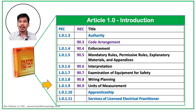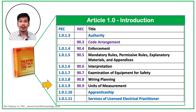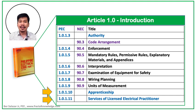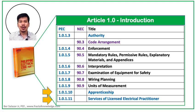Section 1.0.1.8 is about wiring planning and the details of its preparation. Section 1.0.1.9 is about the use of units of measurement in PEC 2017 — this one needs to be understood because we use different kinds of units. Section 1.0.1.10 covers apprenticeship, and Section 1.0.1.11 covers the services of licensed electrical practitioners, both of which have no equivalent section in NEC 2017. Those are the 11 sections in PEC Article 1.0.